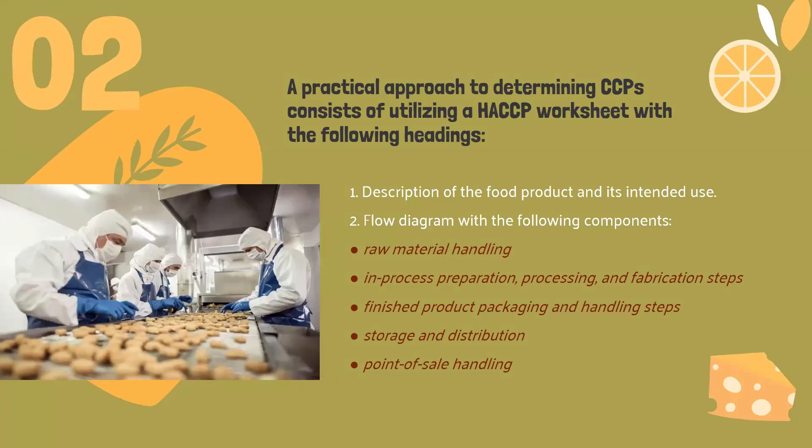Determination of CCPs is also part of the development process. A practical approach to determining CCPs consists of utilizing a HACCP worksheet with the following components: a description of the food product and its intended use, a flow diagram covering raw material handling, in-process preparation, processing or fabrication steps, finishing, product packaging, handling steps for storage and distribution, and point-of-sale handling.